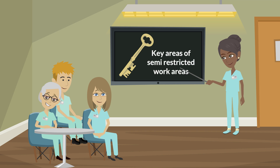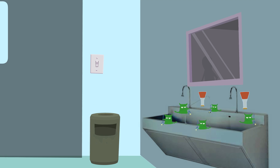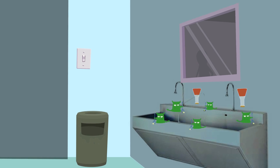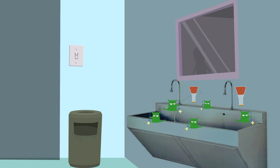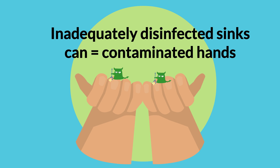Facilities should have additional procedures to clean and disinfect key areas of the semi-restricted work areas. Supervisors should instruct you on cleaning procedures and frequency for these areas, including scrub sinks located outside of the procedure rooms. Clean and disinfect hand scrub sinks nightly, since germs love to live in damp places like sink drains and around faucet handles. Inadequately disinfected sinks may contaminate hands instead of cleaning them.